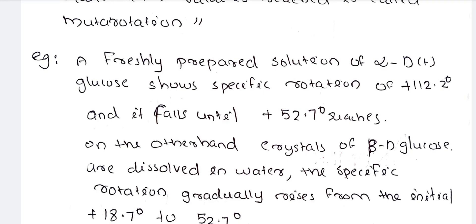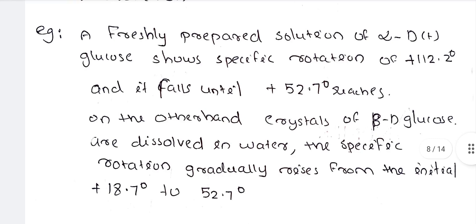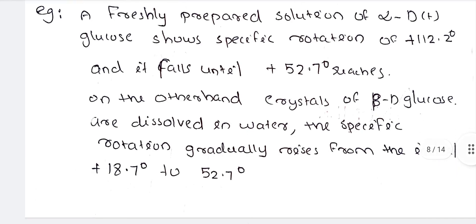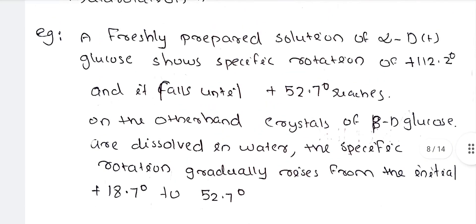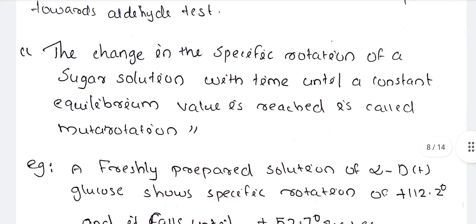Crystals of alpha-D-glucose have a specific rotation of +112 degrees, while crystals of beta-D-glucose have a specific rotation of +18.7 degrees. When either form is dissolved in water, the specific rotation changes until it reaches the equilibrium value of +52.7 degrees, which is the mutarotation equilibrium.